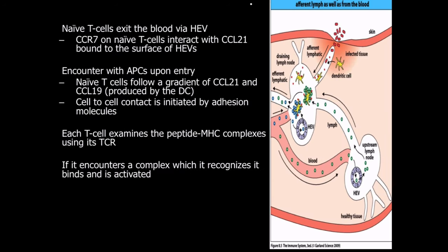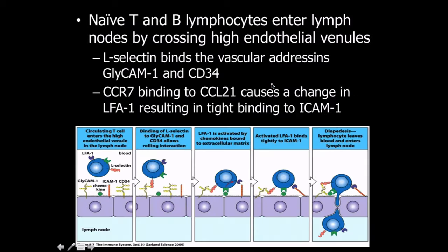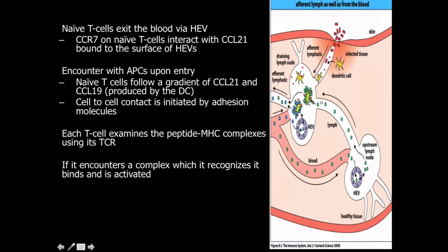T-cells that do not encounter their specific antigen, illustrated here in green, are going to ultimately end up leaving the lymph node via the efferent lymphatic system and eventually rejoin the bloodstream. T-cells that do encounter an antigen that they're specific for on the antigen-presenting cells we've been mentioning are going to be activated and proliferate — those are the ones we see here in blue. The ones that don't make contact with specific antigen-presenting cells are going to end up recirculating through the blood and then through the afferent lymphatic system.